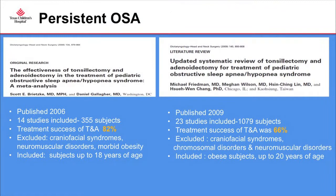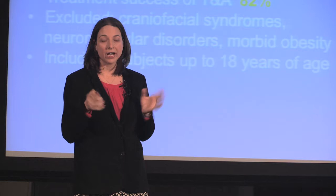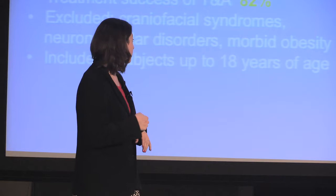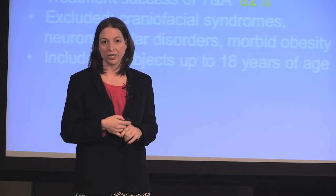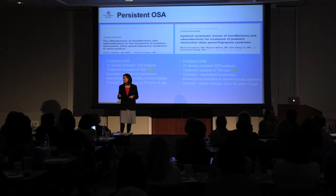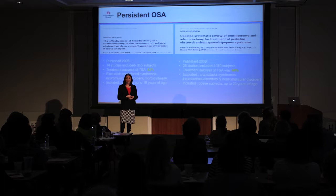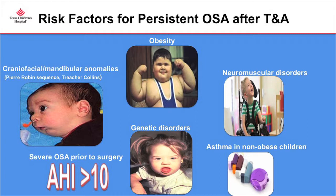There have been two recent meta-analyses looking at persistent OSA after adenotonsillectomy. The 2006 study of over 300 non-syndromic, non-obese subjects found an 82% success rate. The 2009 follow-up with over 1,000 subjects — which included obese kids — found only a 66% success rate. Depending on the study, up to 40% of kids can continue to have sleep obstruction after adenotonsillectomy.